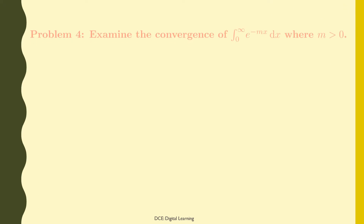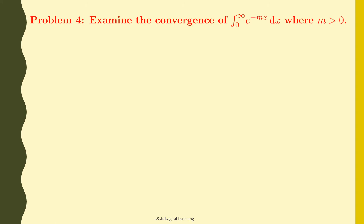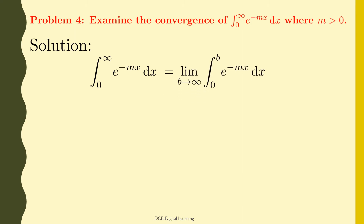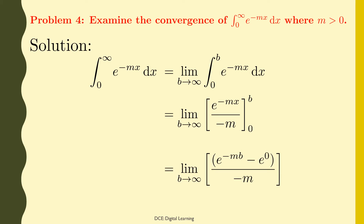Problem 4. Examine the convergence of the integral of e^(−mx) dx from 0 to infinity, where m is greater than 0. Solution. The given integral, integral of e^(−mx) dx from 0 to infinity, is an improper integral of first kind as the upper limit is infinity. So by definition, this equals the limit of the integral of e^(−mx) dx from 0 to b as b tends to infinity. On integration, this equals the limit of e^(−mx)/(−m) from 0 to b as b tends to infinity. Applying the limits, this equals the limit of [e^(−mb) − e^0]/(−m) as b tends to infinity.